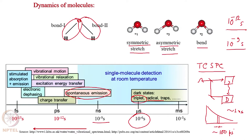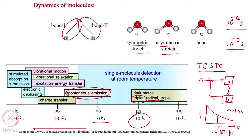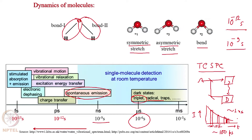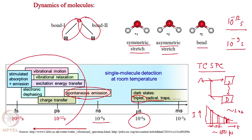In TCSPC, you count the arrival time of the fluorescent photon with respect to the excitation photon, calculate how many photons arrive at each time, create a histogram, and fit an exponential to get the fluorescence lifetime. We can apply electronics up to this time scale but not beyond. However, many physical, chemical, and biological processes occur in the sub-picosecond or picosecond time scale, which is beyond the reach of electronics.